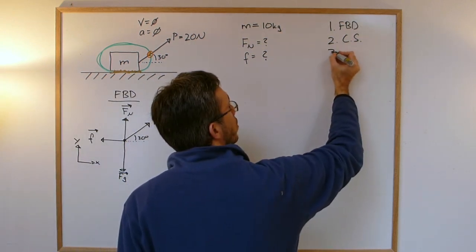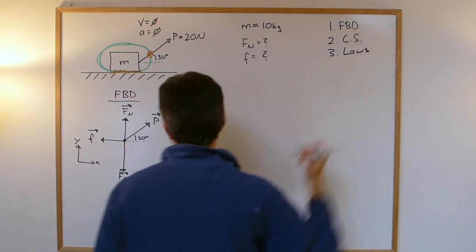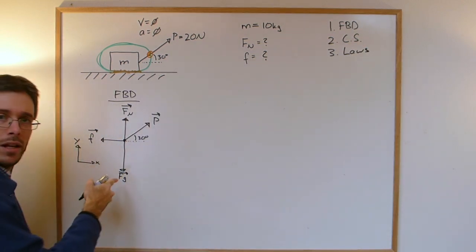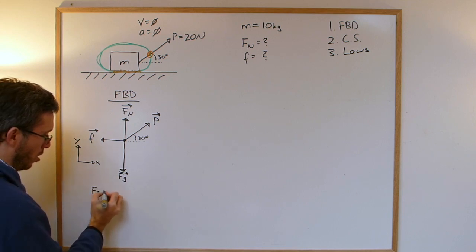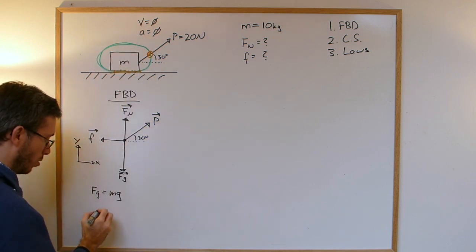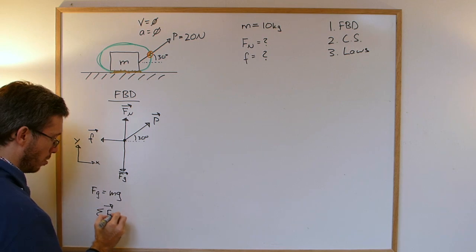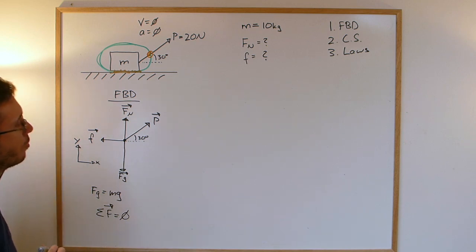Next one, what laws are involved? So here I have gravity, so I do know that Fg is mg, and I know that there is no acceleration, so I do know that the sum of all forces must be zero. So it's actually Newton's first law of motion, and this is the law of gravitation.